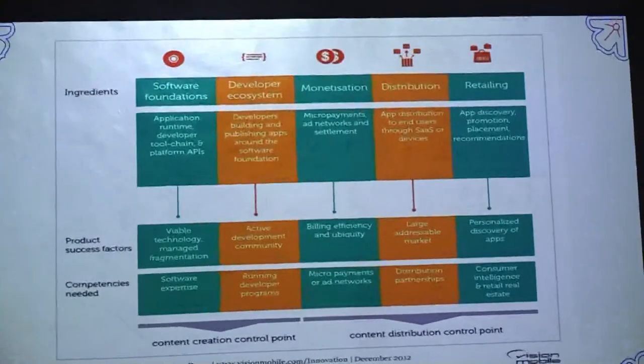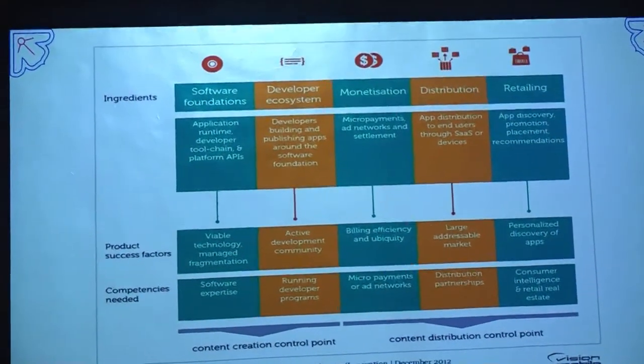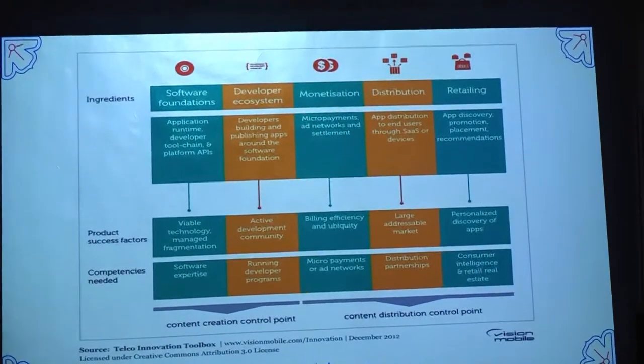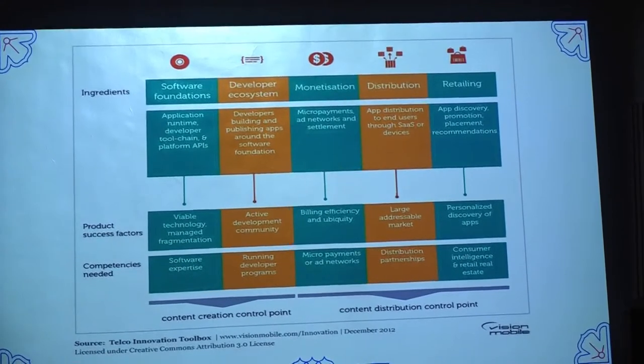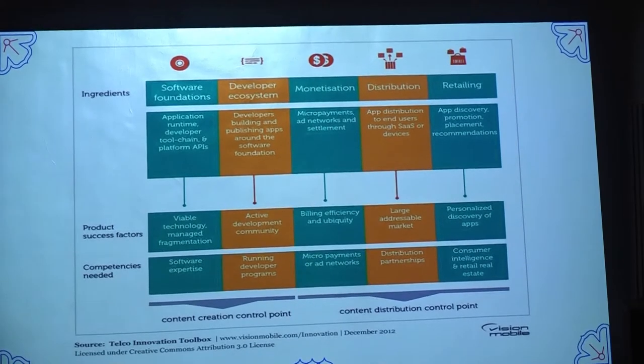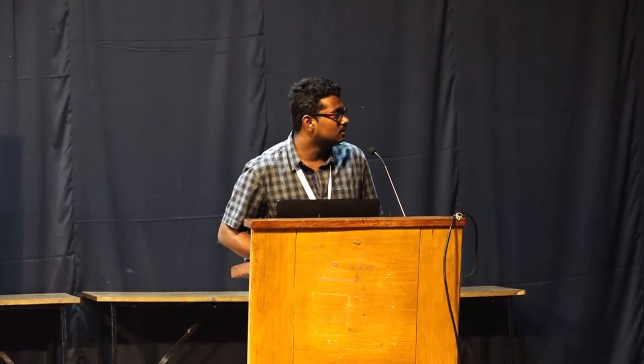These are examples of successful computing platforms - or I can say it is an architecture or standard to be a best computing platform. The bot can act as an intermediary between the content creation point and the content distribution control point. Software foundation, platform APIs, developer ecosystem, monetization, distribution, and retailing are the ingredients to successful computing. Product success factors are calculated by how it has been managed in a fragmented manner, how it actively participates in the community, how it has been ubiquitous in nature, how it has a large addressable market, the personalized discovery of applications, and how it can tackle key competencies. These are the standards for successful computing platforms.